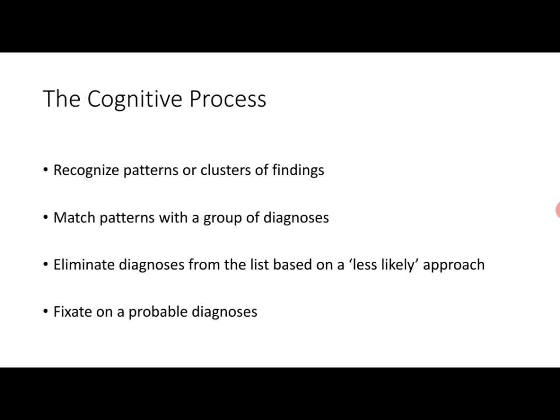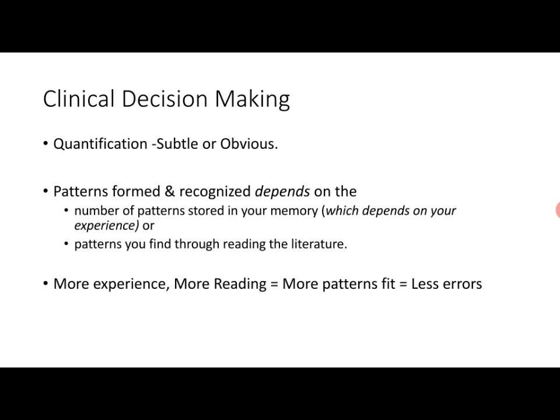We match patterns with a group of diagnoses, then work on eliminating diagnoses based on what is less likely, narrowing down to a smaller list of probable diagnoses and then fixating on one or two most likely diagnoses. Underlying clinical decision making — whether we like it or not, whether we are aware of it or not — is a process of quantification. It can be very subtle or very obvious, in the form of percentages, absolute numbers, proportions, odds ratios, relative risk, or risk reduction.